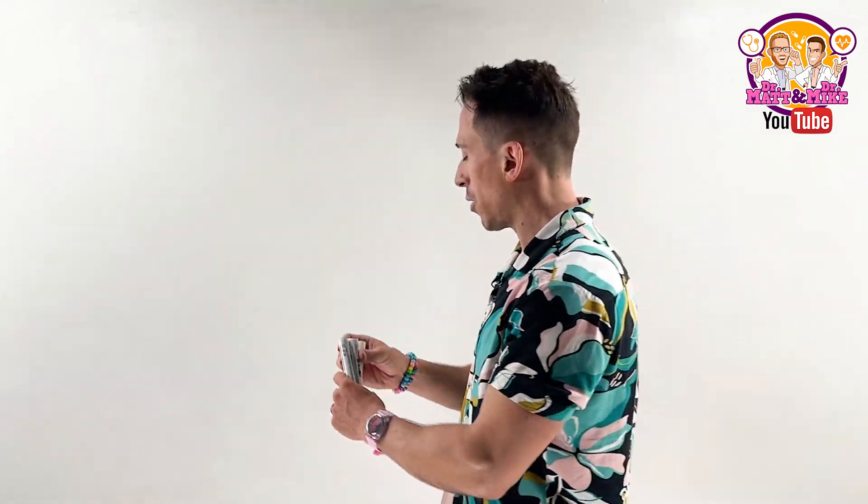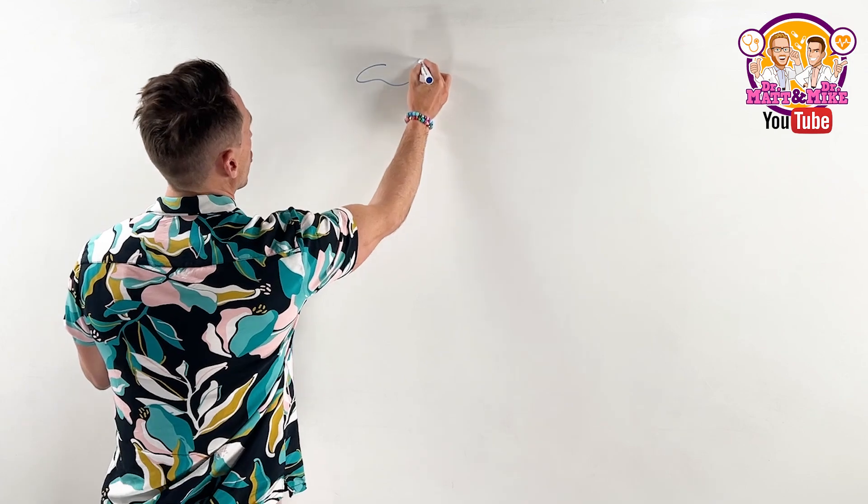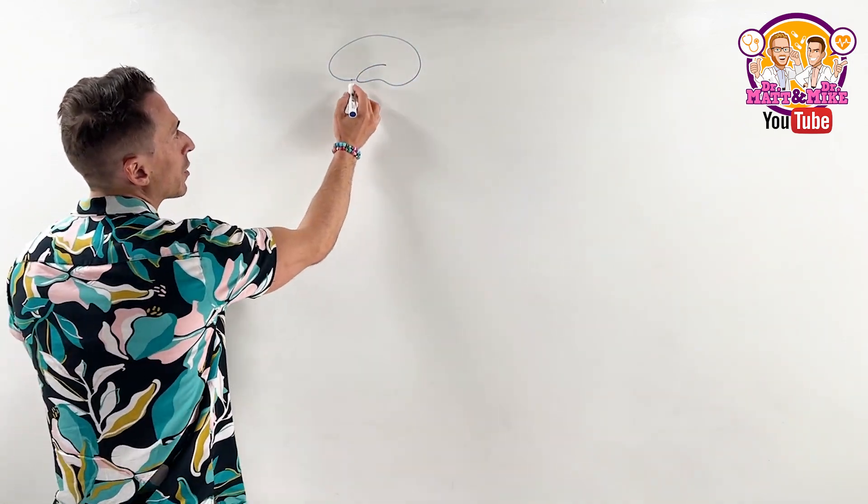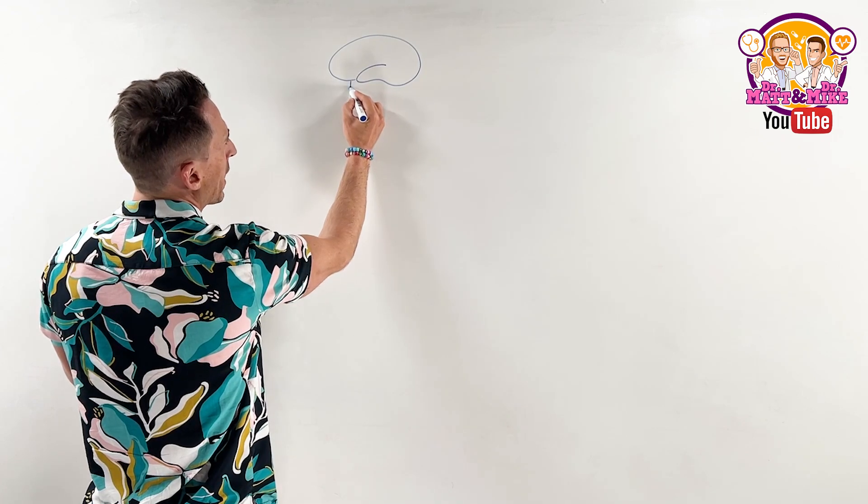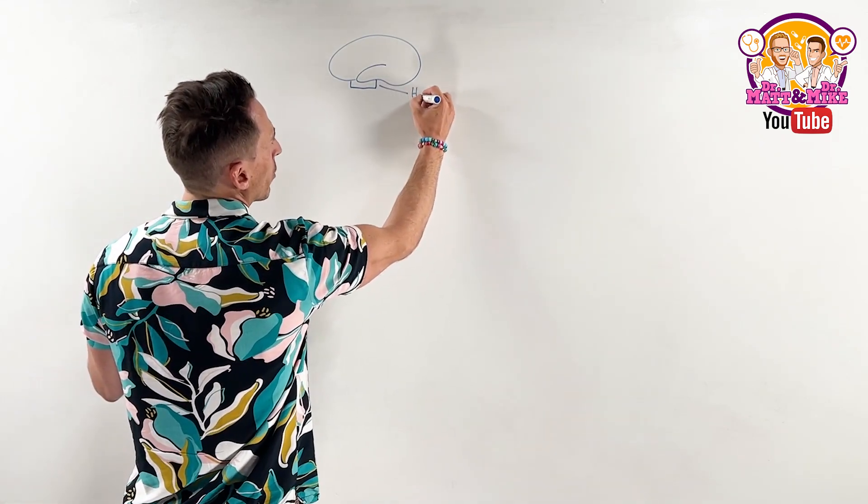To begin we need to start with the brain. If I were to draw the brain up, that's the front, that's the back. There is going to be an area right at the base of the brain around about here that we term the hypothalamus.